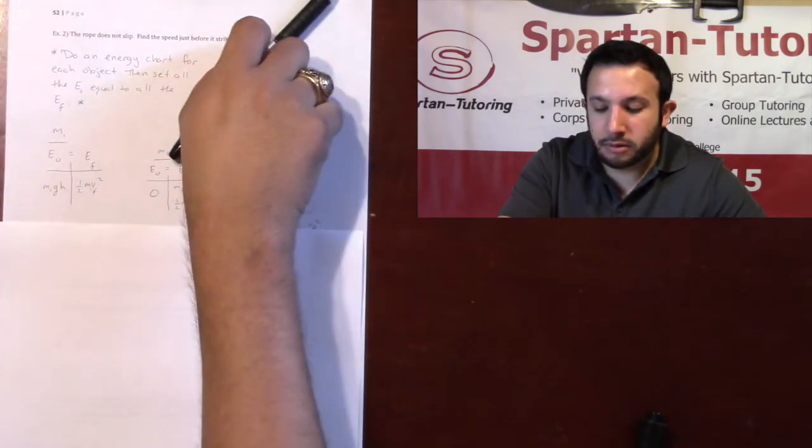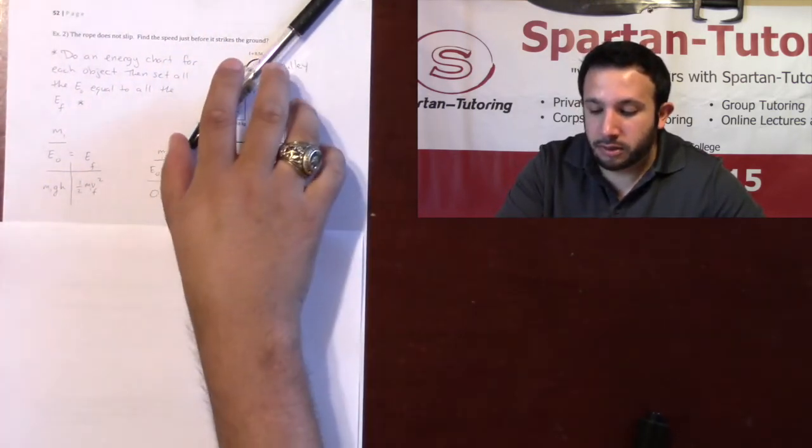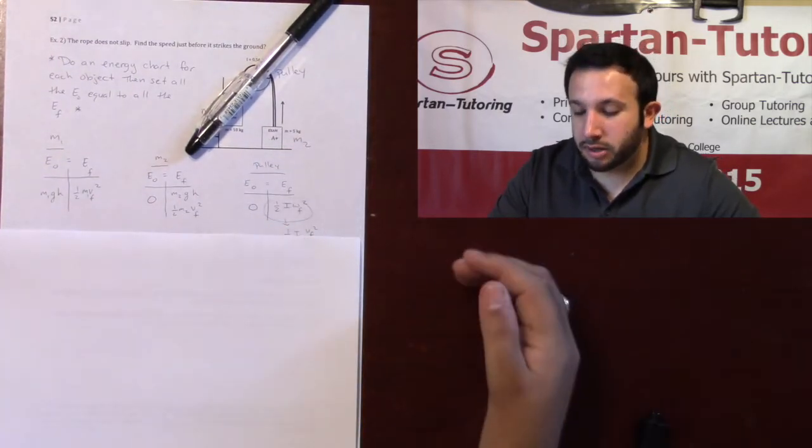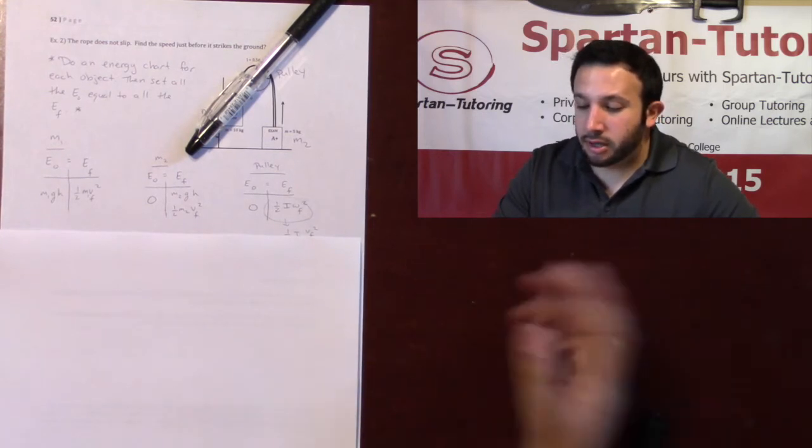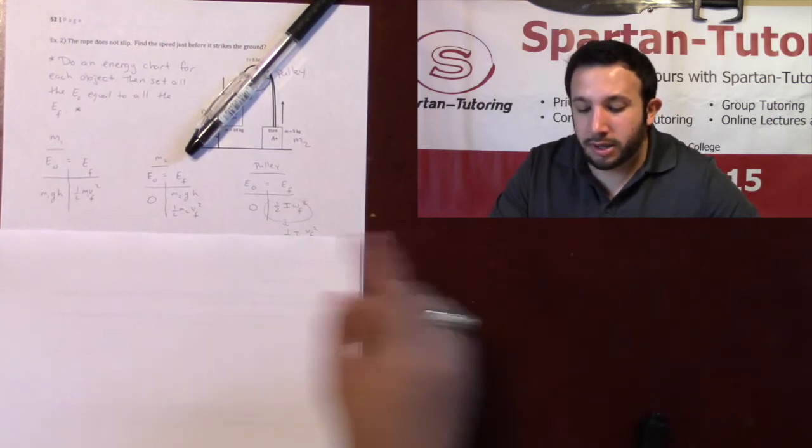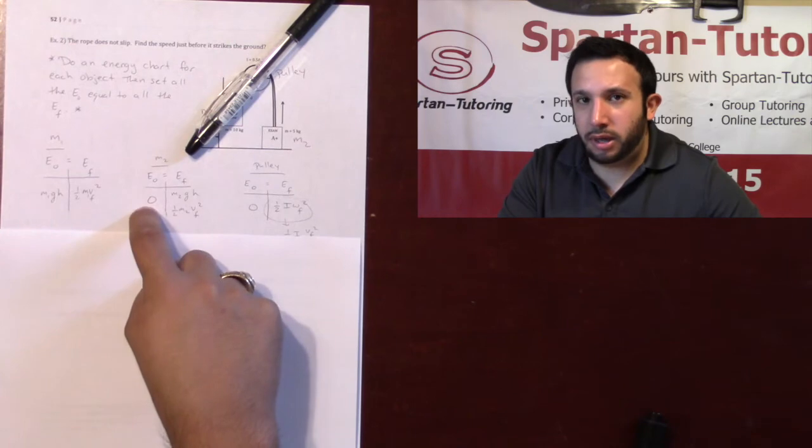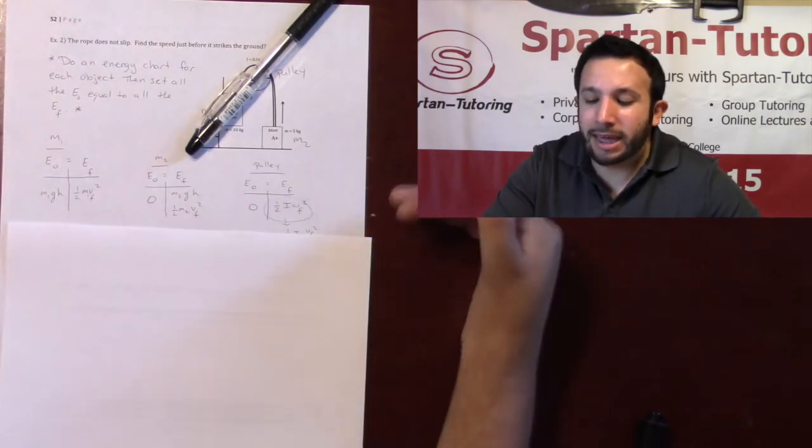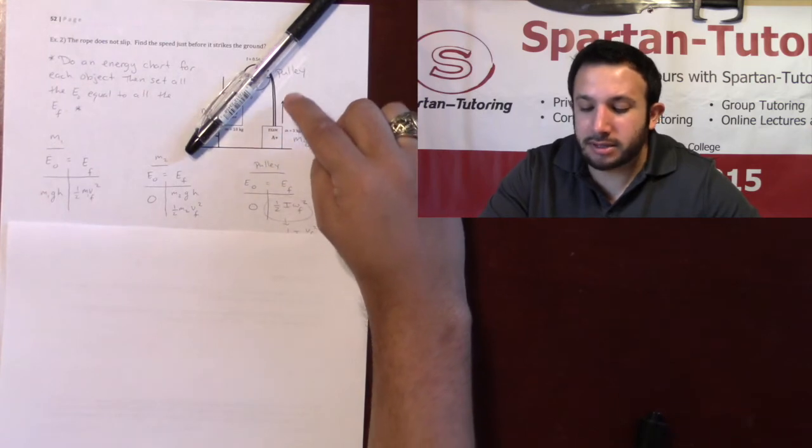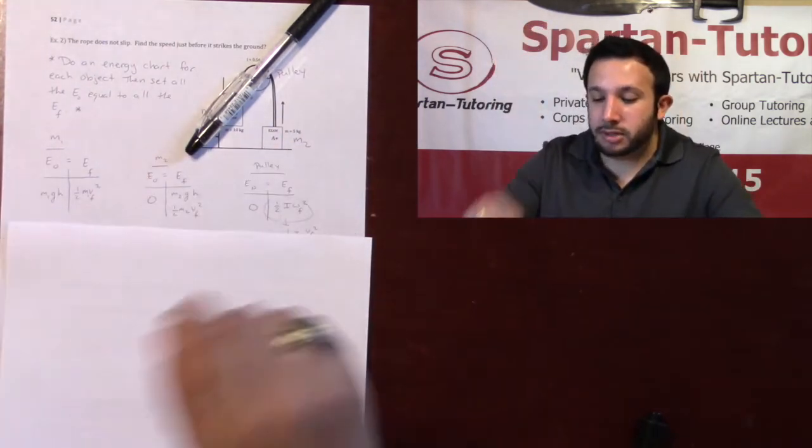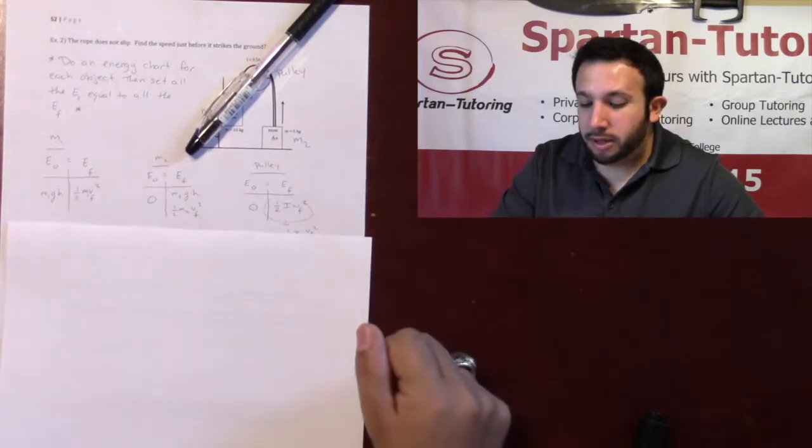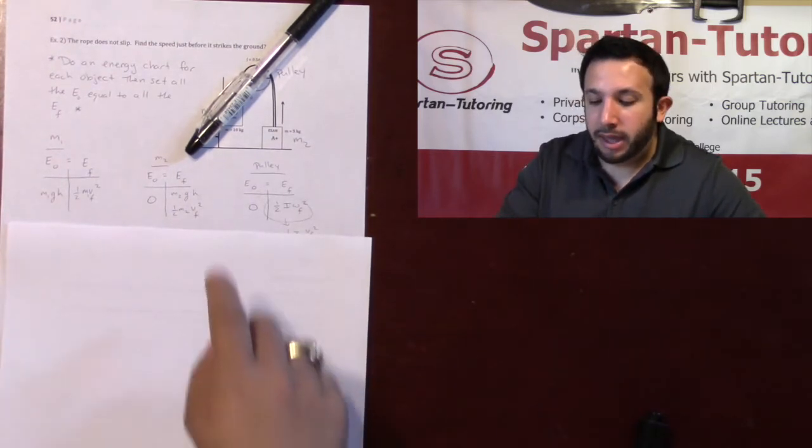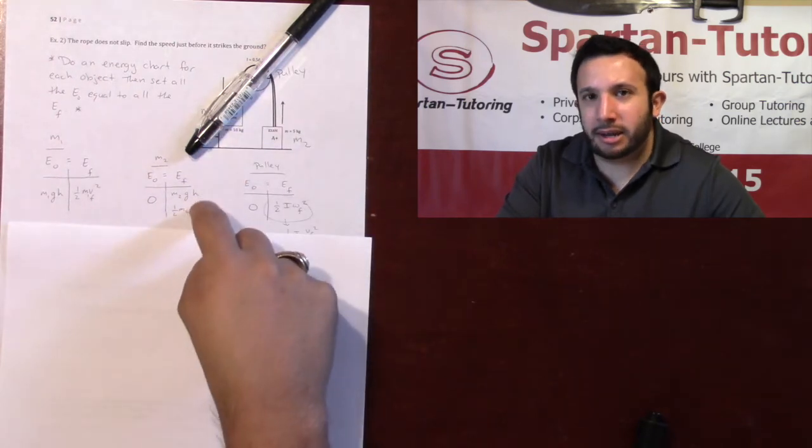Now, let's focus on block 2. Initially, it is not at some initial height. It has no potential energy. Initially, it's not moving. Initially, it's not rotating. Initially, it's not on a spring. Initially, there is no energy in block 2. However, at the end, it'll be raised some height H, right? As one goes down, the other goes up. Block 2 is going to be going up. And then at the end, it'll also have some final velocity. And so it'll have potential and kinetic energy at the end.